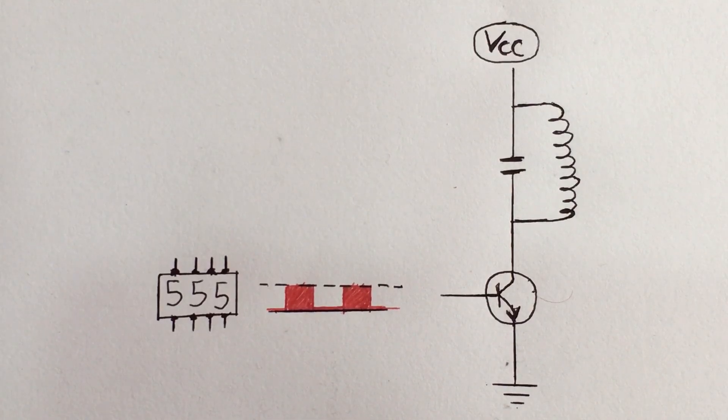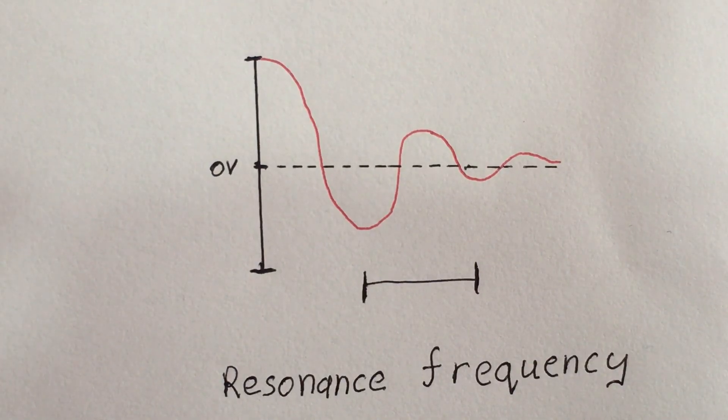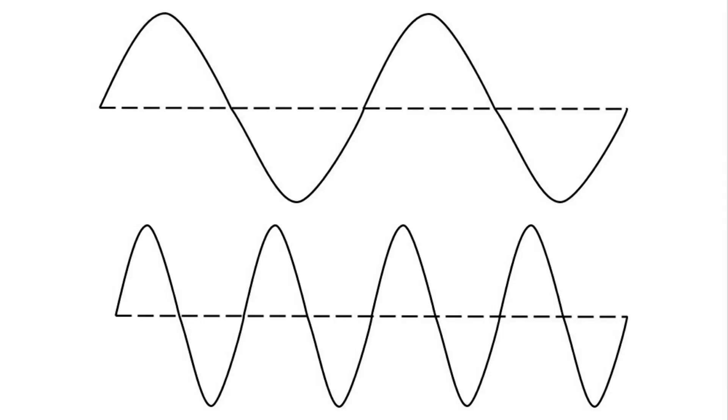To make this circuit work, we need the DC pulse frequency to match with the resonance frequency of this LC circuit. But why do we need to do that? Let's see. Let's take an example of these two waves which have different frequencies.